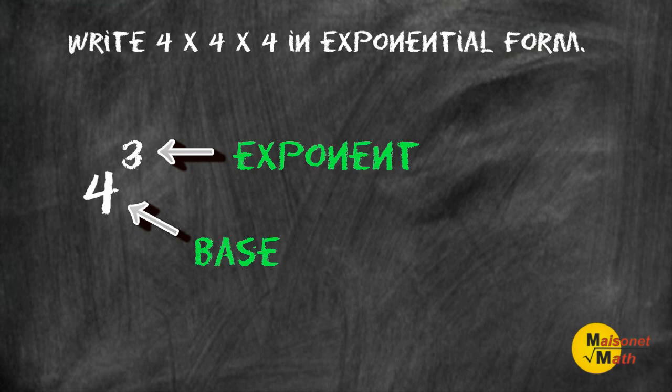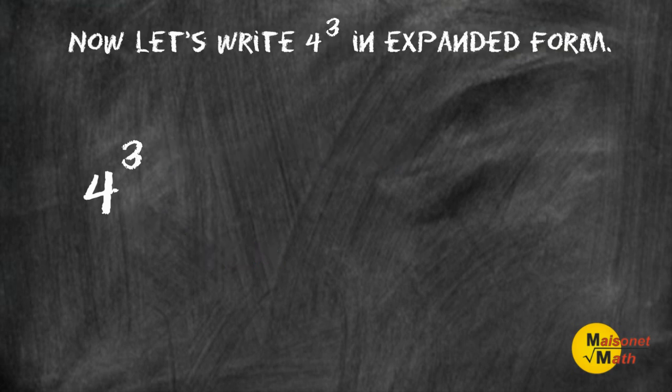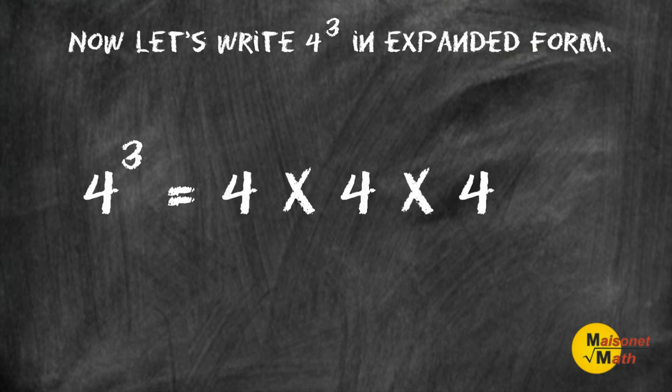Now let's write 4 to the third power in expanded form. The word expand means to stretch out, so we must stretch out 4 to the third power or write it the long way. Remember, the exponent just tells us how many times we write the base. So writing 4 × 4 × 4 is writing 4 to the third power in expanded form.